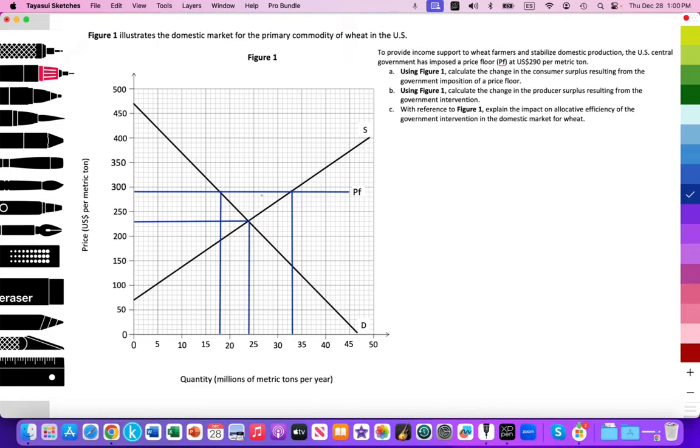And then we provide this model with the price floor already imposed. And it highlights for us the quantities supplied and demanded along with the free market equilibrium price and quantity. So that could be a model that you might see on a paper three exam. So let's go ahead and start tackling question A.